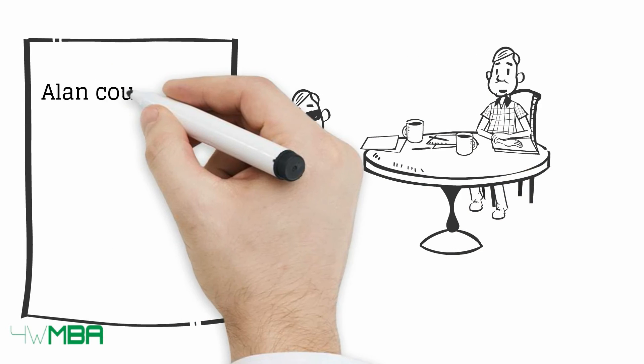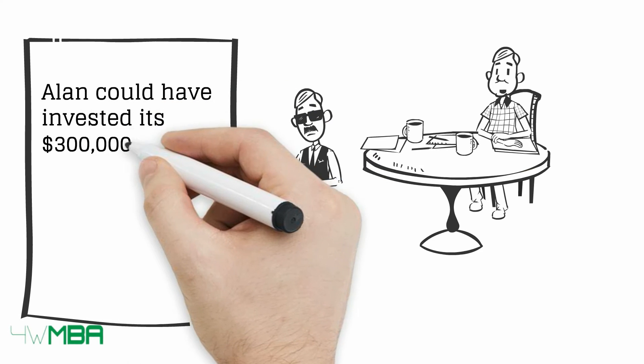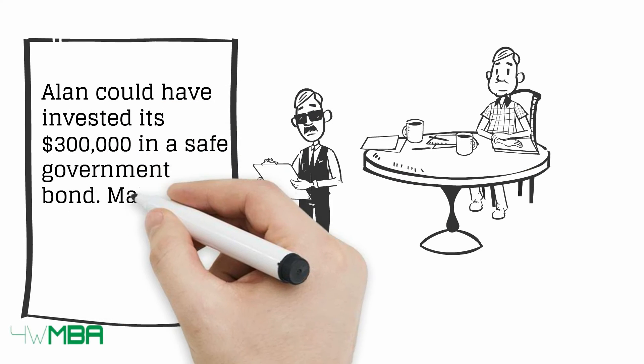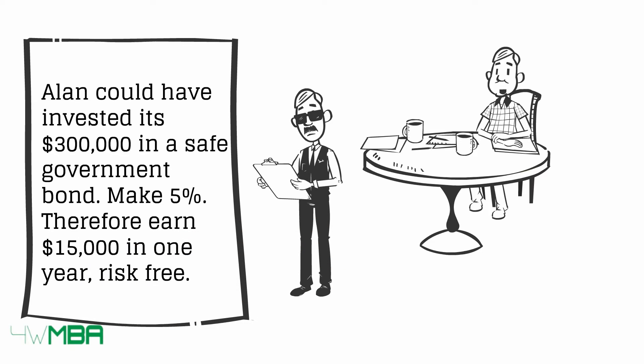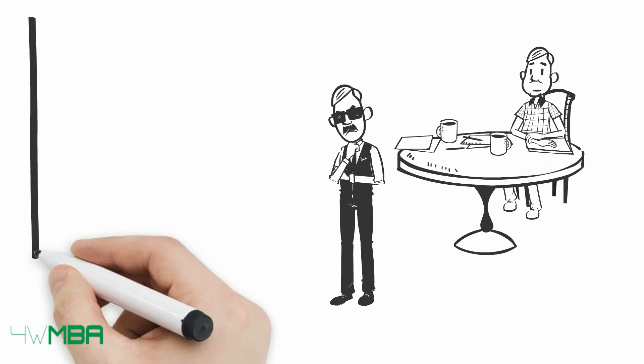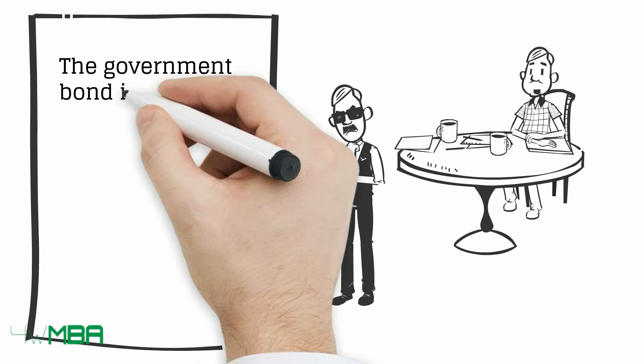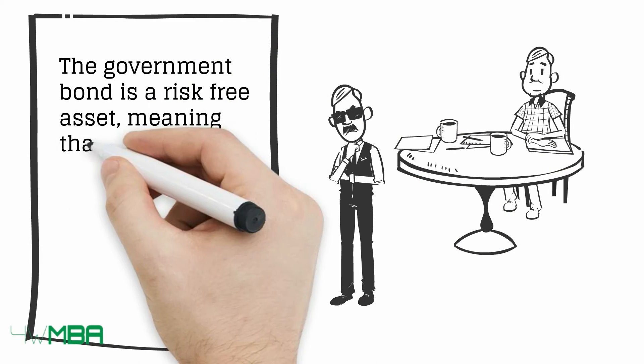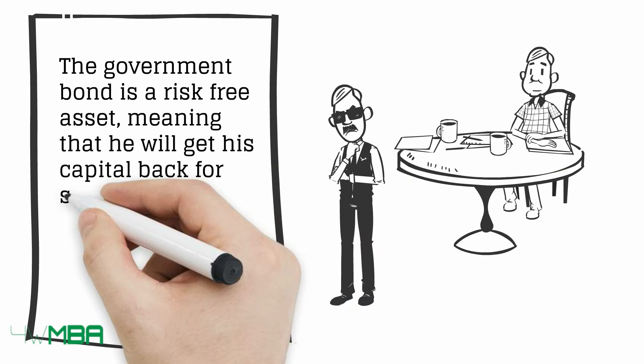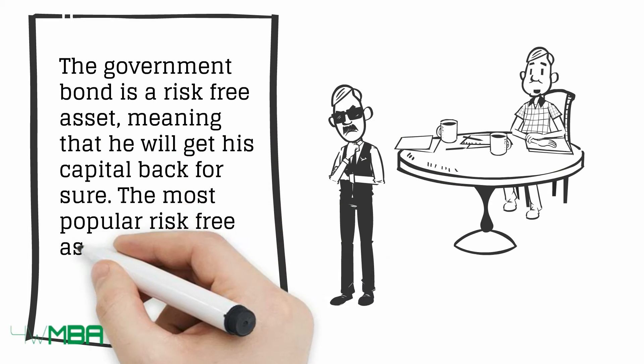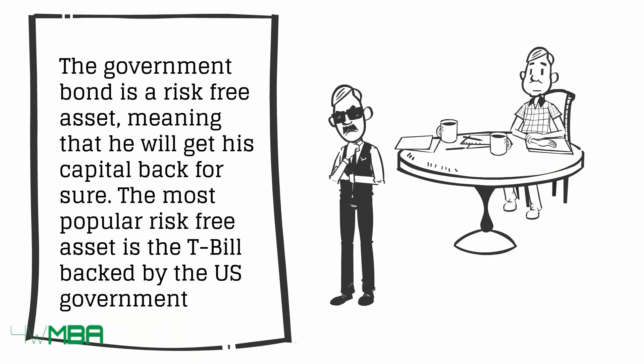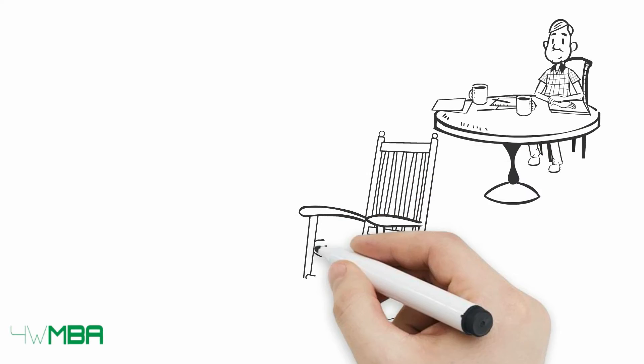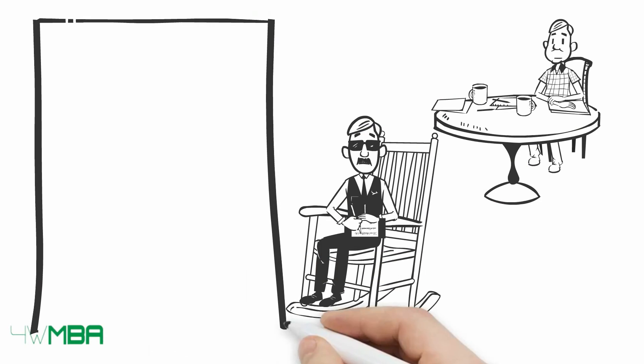Alan could have invested his three hundred thousand dollars in a safe government bond making five percent, therefore earning fifteen thousand dollars in one year risk-free. The government bond is a risk-free asset, meaning Alan would get his capital back for sure. The most popular risk-free asset is the T-bill backed by the US government.